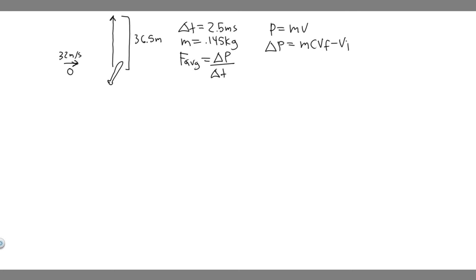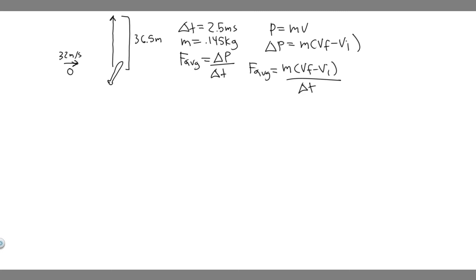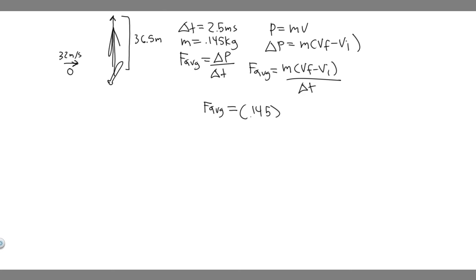So the formula we're going to use is: F average equals m times (v_final minus v_initial) over the change in time. Let's start with the x direction. F average equals mass 0.145. Its initial velocity in x is 32 m/s, and since it gets hit straight up, its final velocity in x is just 0. So the change in velocity is 32.